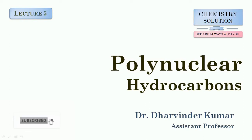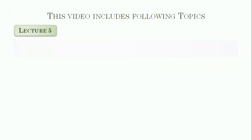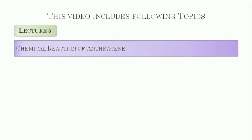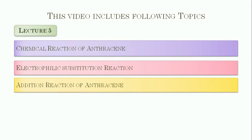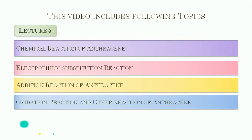Dear student, this is lecture 5 in polynuclear hydrocarbons. In the previous lecture, we discussed nomenclature and isomerism in anthracenes, resonance and orbital structure of anthracenes, synthesis of anthracenes and its physical properties. In today's lecture, we are going to discuss the chemical properties or chemical reactions of anthracenes, including electrophilic substitution reactions, addition reactions, oxidation reactions, and other reactions of anthracenes.